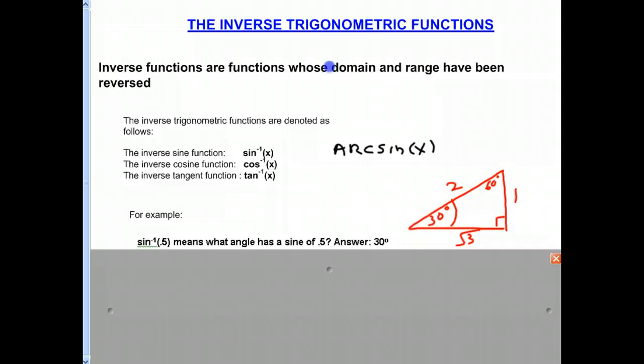And so this is kind of the reverse of that since we are reversing the domain of range. Or another way of saying that is reversing the inputs and outputs. So the inverse sine of 0.5 means what angle has a sine of 0.5? The answer is 30 degrees.